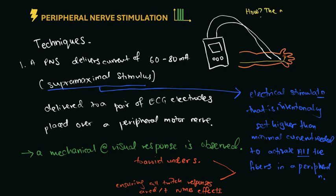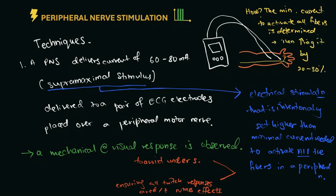So how do we go about estimating the supramaximal stimulus? The minimum current to activate all fibers is determined and then increasing it by a minimum of 20 to 30%. That will give us a supramaximal stimulus.